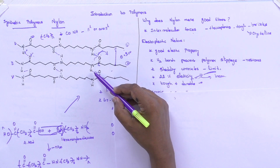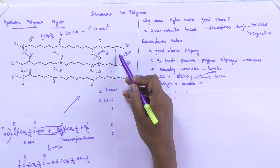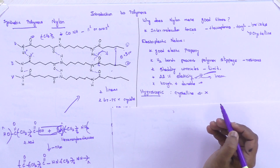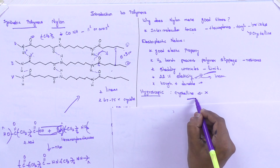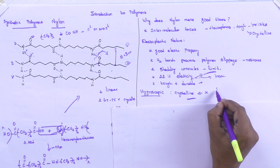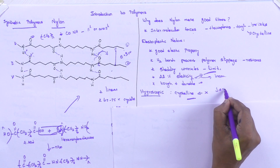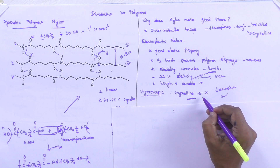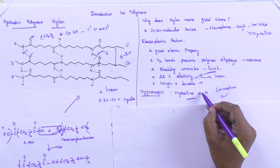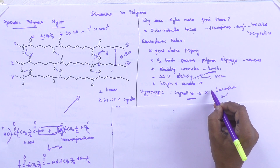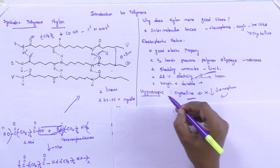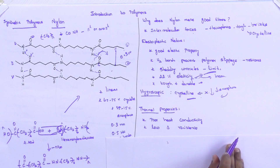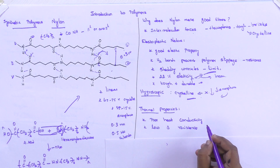Nylon is very tough and durable because the hydrogen bond distance is only 0.3 nanometers. Is it hygroscopic? No — due to its crystalline nature, the lesser amorphous region will not allow any water molecules to enter. Therefore, the high crystallinity lowers the hygroscopic nature of nylon.